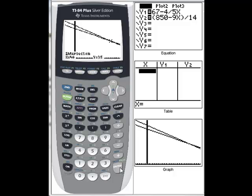And there's our solution. So these intersect when x is 40 and y equals 35. And that's how we can do it with a graphing calculator.